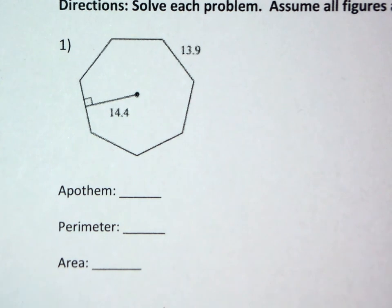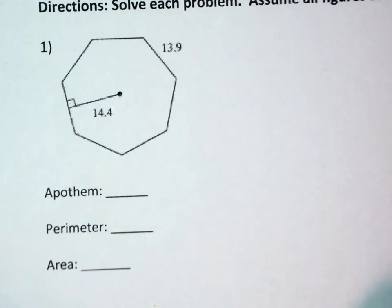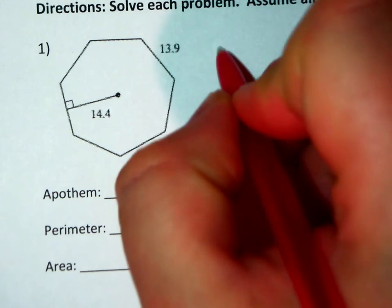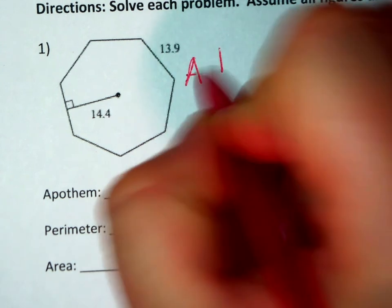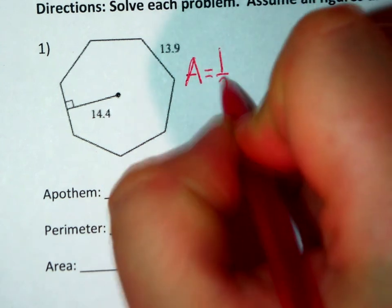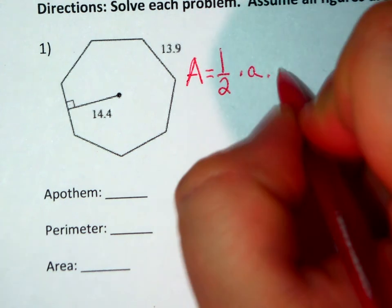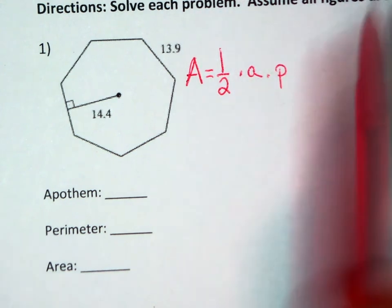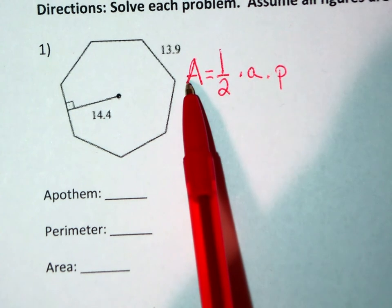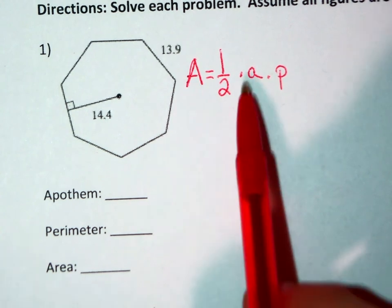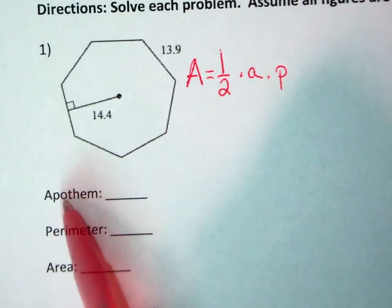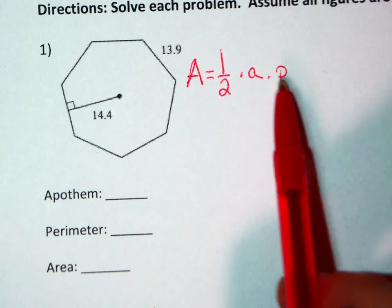The formula we utilized for solving the area of regular polygons was A equals 1/2 times little a times p. In this formula, the big A represents the area, little a represents the apothem, and p represents the perimeter.